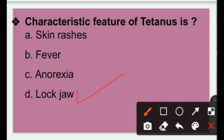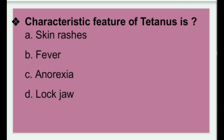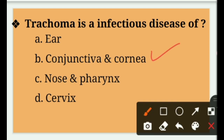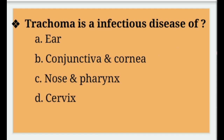Next question: Trachoma is an infectious disease of — ear, conjunctiva and cornea, nose and pharynx, or cervix. The right answer is option B — conjunctiva and cornea. Trachoma is a bacterial infection that affects the eyes, caused by the bacteria Chlamydia trachomatis, affecting the conjunctiva and cornea.